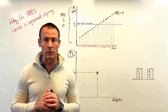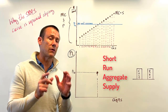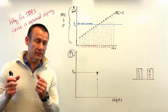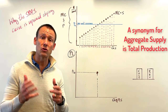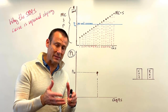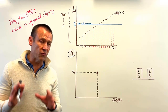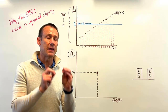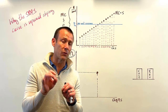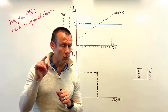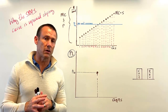We associate the SRAS curve with the AS-AD model — a model of our macro economy. Aggregate supply is the total production of domestic final goods and services, and aggregate demand is total spending on domestically produced final goods and services. The short-run definition is going to be pivotal for why aggregate supply is upward sloping.